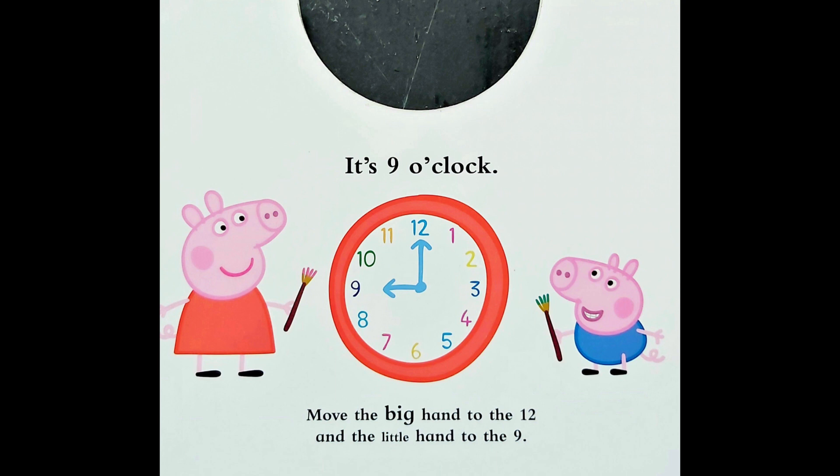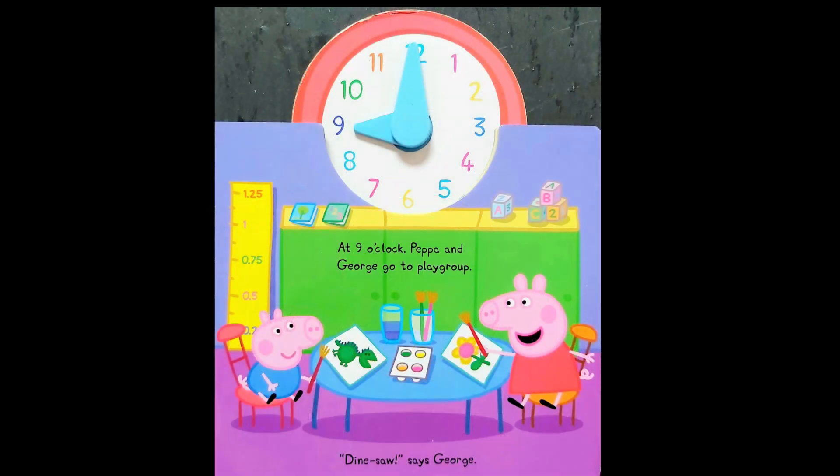It is nine o'clock. Move the big hand to the twelve and the little hand to the nine. At nine o'clock, Peppa and George go to playgroup. Dinosaur, says George.